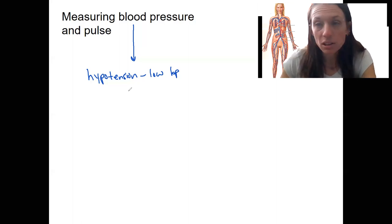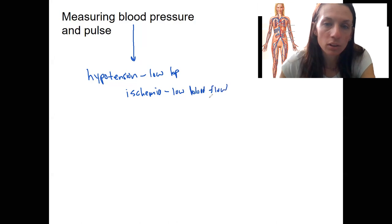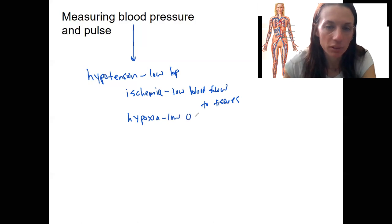Hypotension is low blood pressure and it's a concern because it can result in ischemia, which is low blood flow to the tissues. This is a problem. Another similar but different thing is hypoxia. Hypoxia is low oxygen levels, if we don't have enough oxygen being carried to our tissues. We'll look at this one again when we get to the respiratory system.